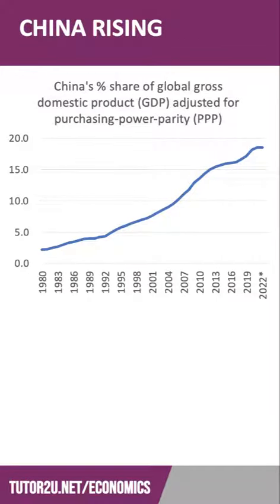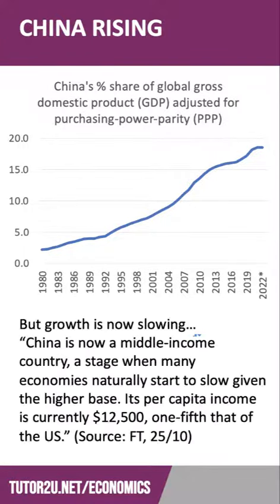The long-term growth of China's share of world GDP, adjusted for PPP, is clear to see from this chart. However, there are signs that economic growth in China is moderating — there's a slowdown in growth rates.